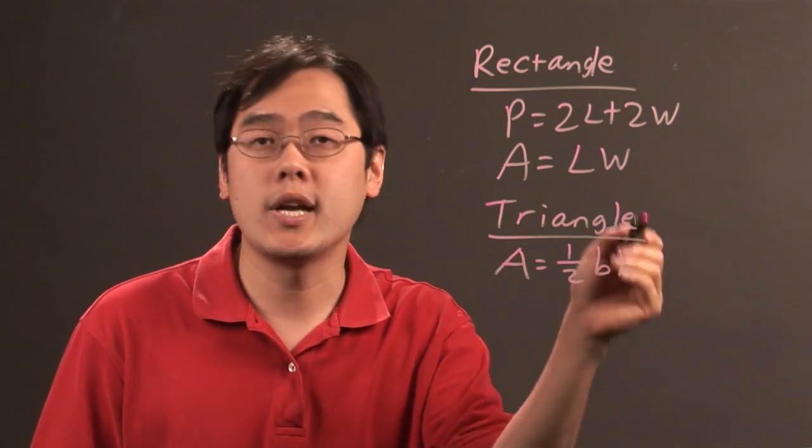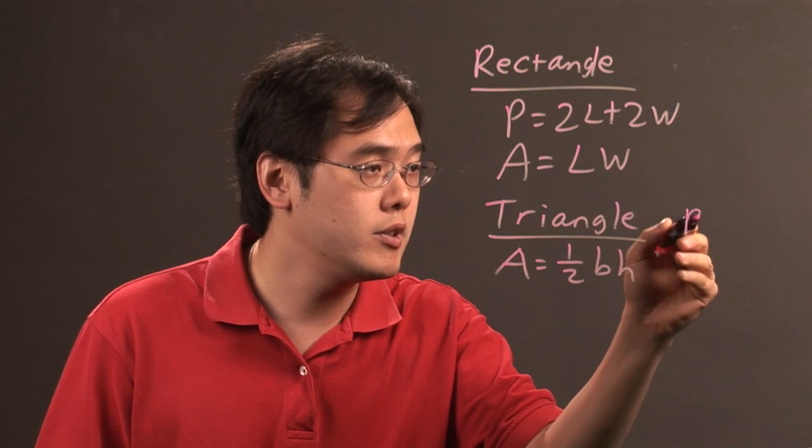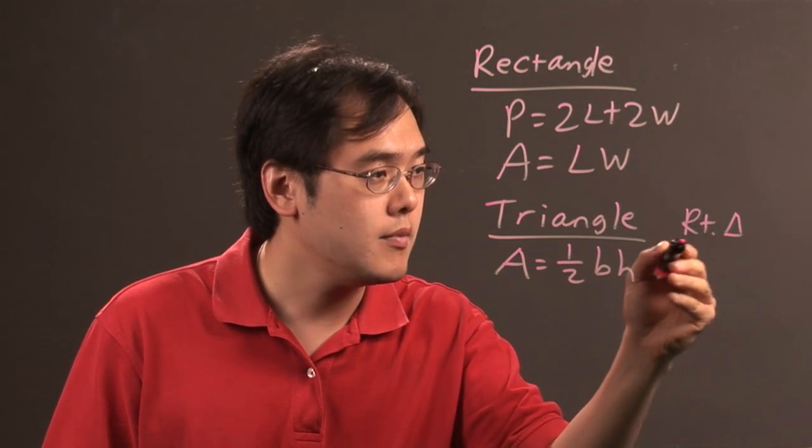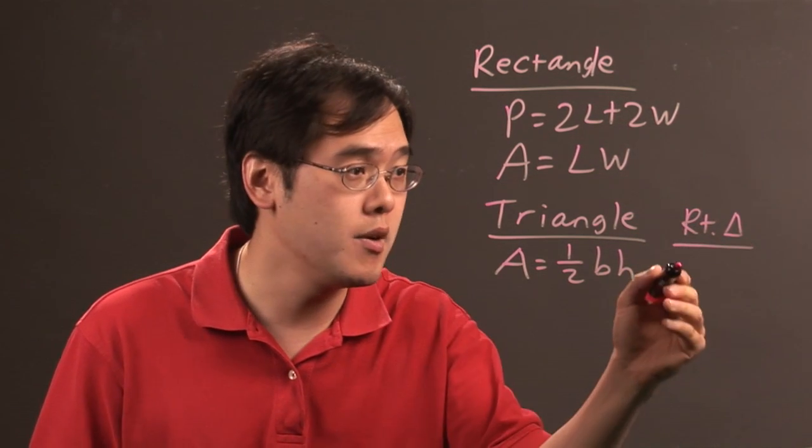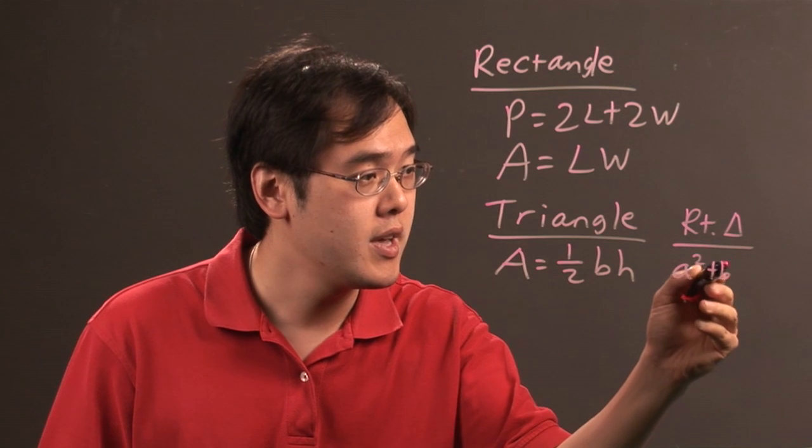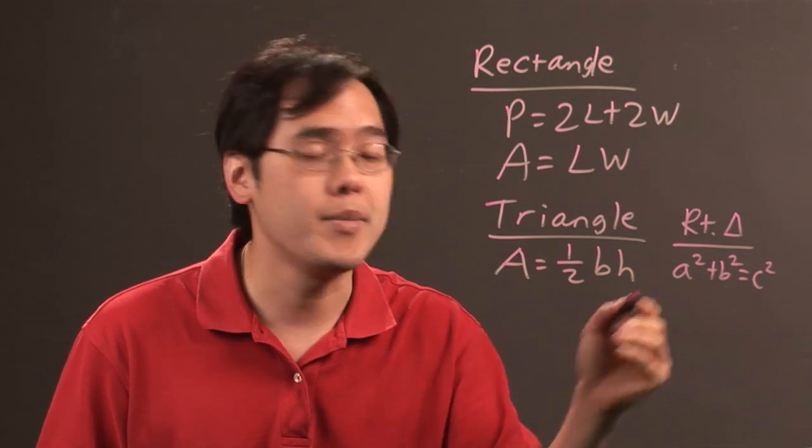A special kind of triangle that you may have is that of a right triangle. The right triangle uses the Pythagorean theorem, which is a squared plus b squared is equal to c squared. A and b are your legs.